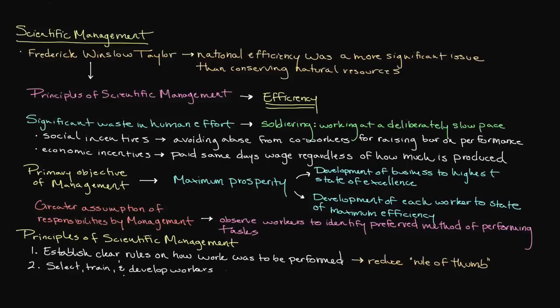Management could also reassign workers at this stage as the goal was to allow workers to perform the tasks that they could excel in. The third principle of scientific management was for management to cooperate with workers to ensure the work is being performed consistent with the rules that were previously identified.